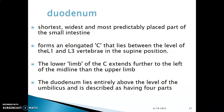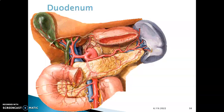The duodenum usually forms an elongated C. This C lies between L1 and L3 vertebrae, so when in the supine position, the C of the duodenum lies between L1 and L3 vertebrae. The lower limb of the C extends further to the left of the midline than the upper limb. The duodenum is described as having four parts.